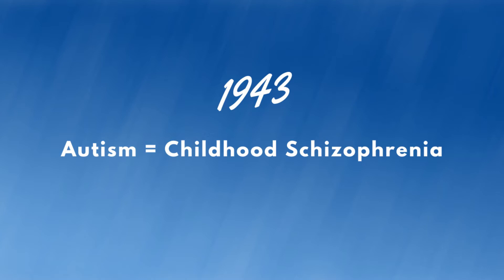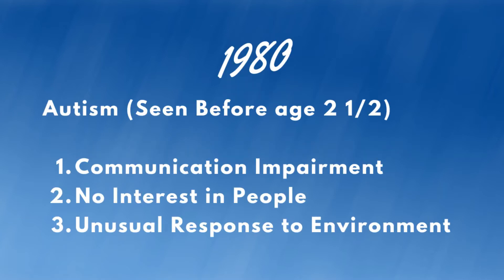In the 1970s, different studies suggested the cause may be rooted in brain development. In 1980, autism was described in the third edition of the Diagnostic and Statistical Manual of Mental Disorders — the DSM — as a "pervasive developmental disorder" and was given a separate diagnosis from schizophrenia for the first time. The diagnosis was based on three observations: severe communication impairment, no interest in people, and unusual responses to the environment — all of which had to be observed within the first two and a half years of life.